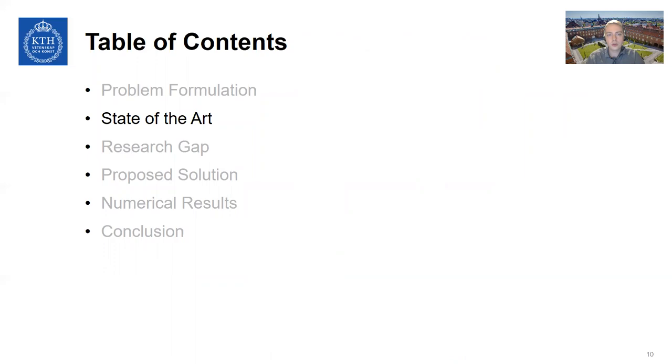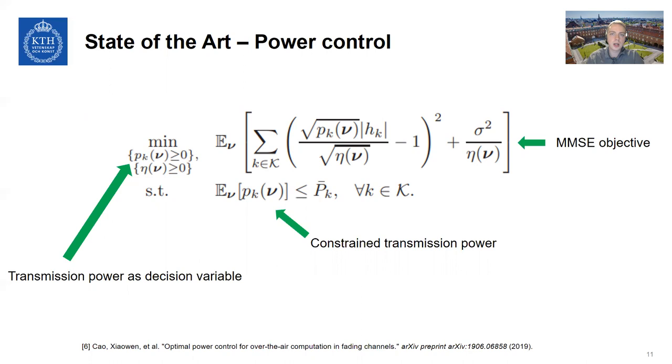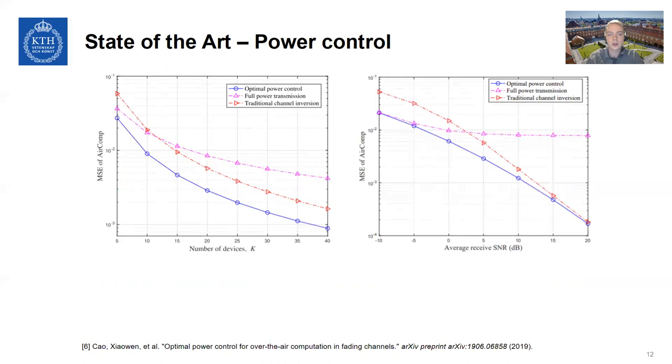I'll move on to talk a little bit about the state of the art to see how other researchers right now are tackling this problem. Basically, there's really only one big branch of research here, which is that of power control. So the idea then is to solve some sort of minimum mean squared error problem by optimizing over the transmitting power at the devices. And these transmitting powers are coupled with a post-transmission scalar eta at the server side. And this problem has been solved for a wide variety of settings in the current literature, given different constraints, for instance, on the peak transmission power, as we can see here.